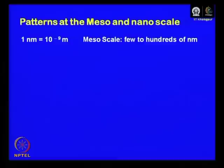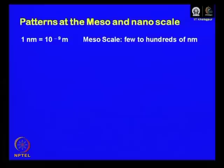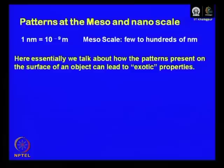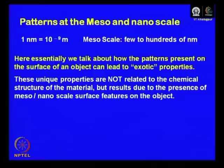What we intend to talk about in this particular course are patterns at meso and nano scale, which are present on the surface. A nanometer is 10 to the power minus 9 meters. Meso scale is a word used to define length scales varying between a few to hundreds of nanometers — tens of nanometers to a couple of microns is what we will regard as meso scale. Essentially we talk about patterns present on the surface of an object that can lead to exotic properties — unique properties not related to the chemical structure or formulation of the material, but resulting due to the presence of surface features.